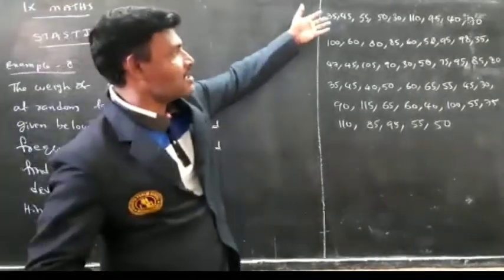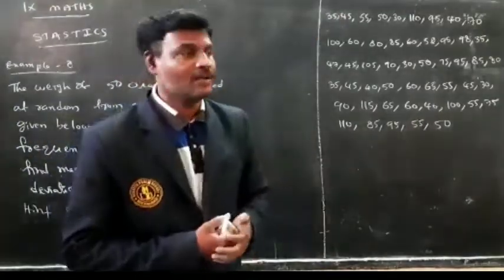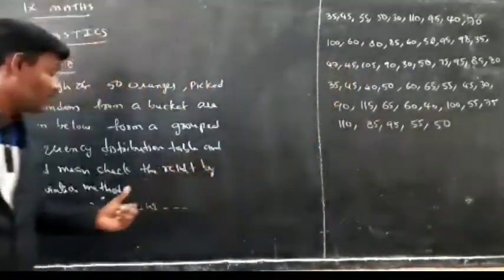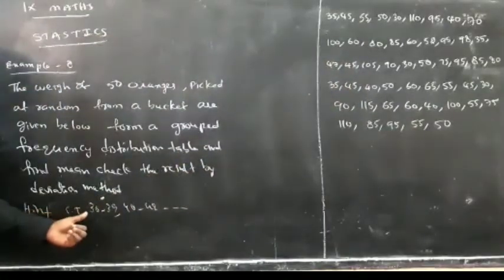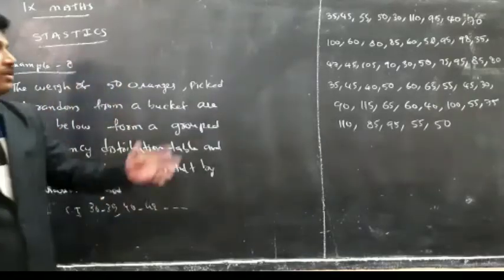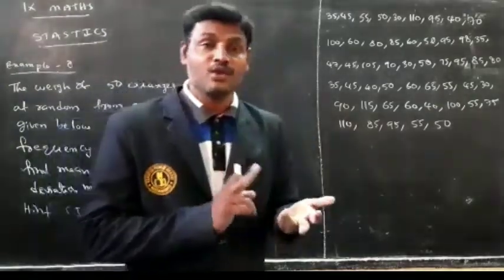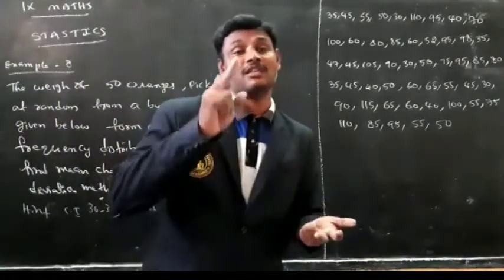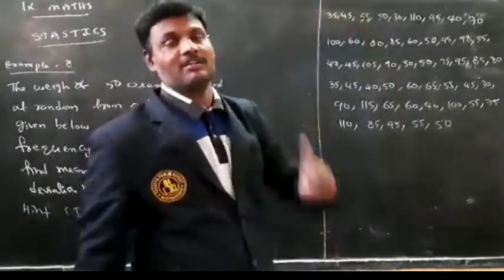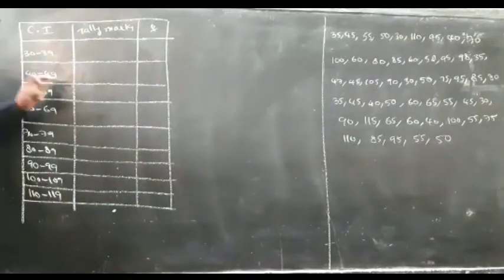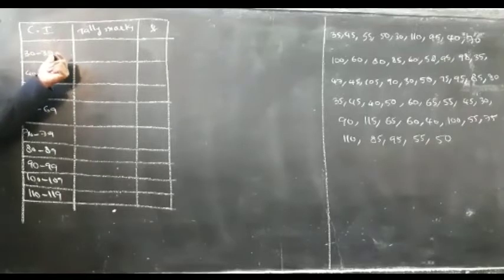These are the weights of the 50 oranges. By taking grouping into a grouped frequency distribution table, the class intervals are 30 to 39, 40 to 49, 50 to 59, and so on. In the class 30 to 39, 30 is called the lower boundary and 39 is called the upper boundary of the class.